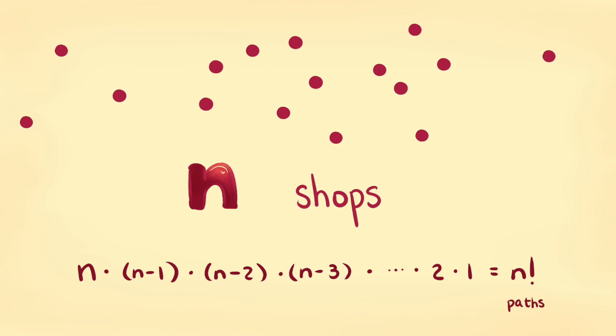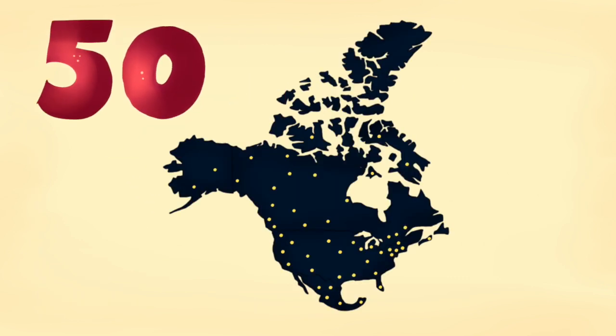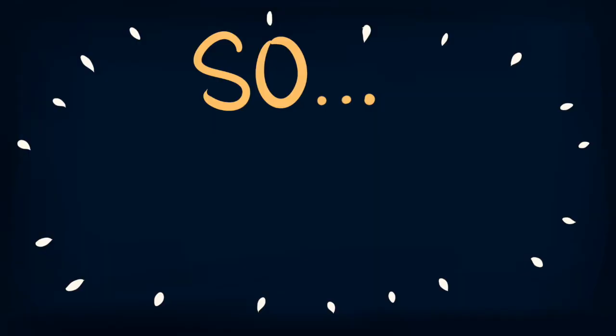What about n shops total? That would leave us with n factorial paths. For even slightly more cities, the number of paths increases to dangerously high numbers. How about 50 cities across North America? We're already buried under this many paths. It's unmanageable. So what do we do?